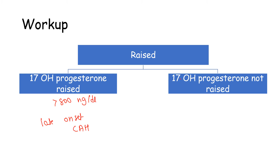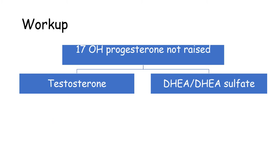If the level of 17-hydroxyprogesterone is not raised, we try to find out which type of androgen is elevated — whether it is testosterone, DHEA, or DHEA sulfate. If it is DHEA or DHEA sulfate, the major organ causing this is the adrenal cortex, so most probably the cause will be a tumor of the adrenal cortex secreting DHEA and DHEA sulfate.